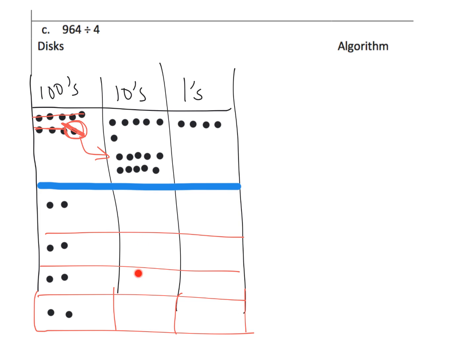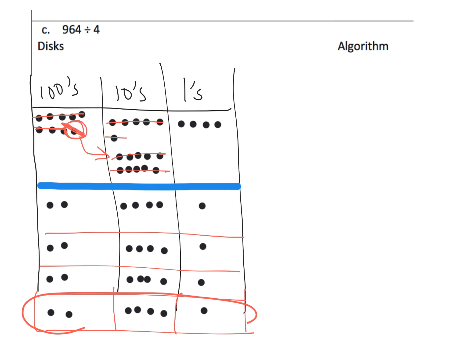16 tens sorted amongst 4 groups means each group gets 4 dots. 4 times 4 is 16, so we've used up all 16 dots perfectly with nothing left over. Now we have just 4 ones to sort amongst the 4 groups — each group gets 1 dot. That tells us our answer: 241.